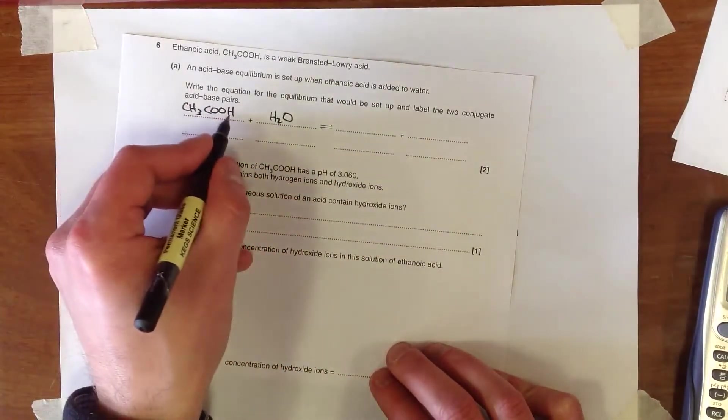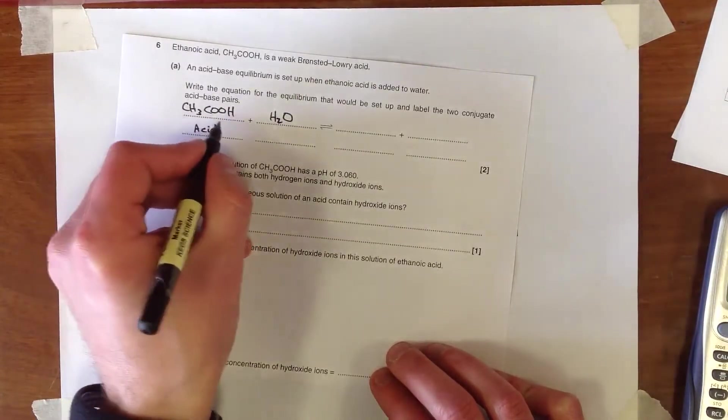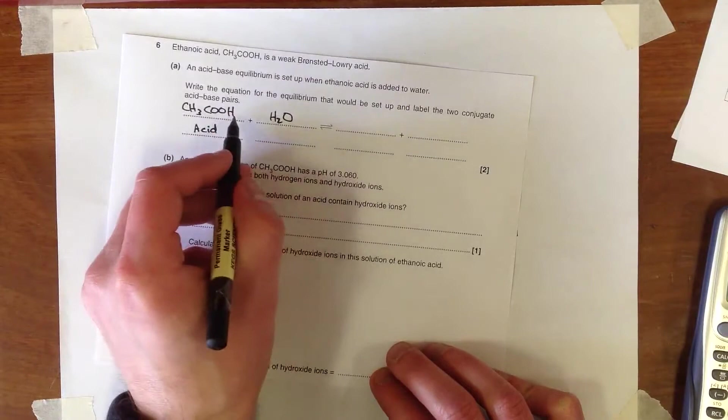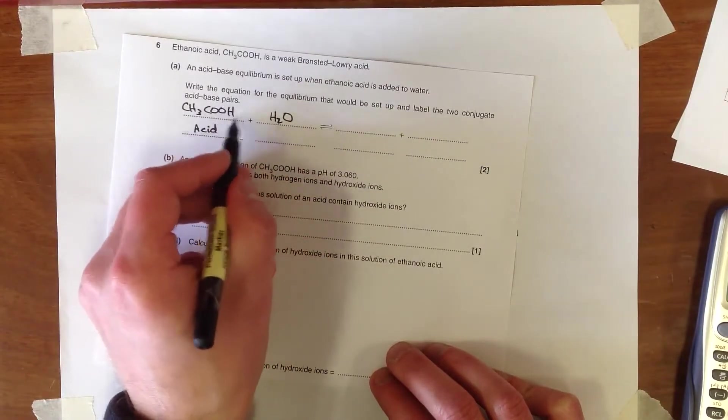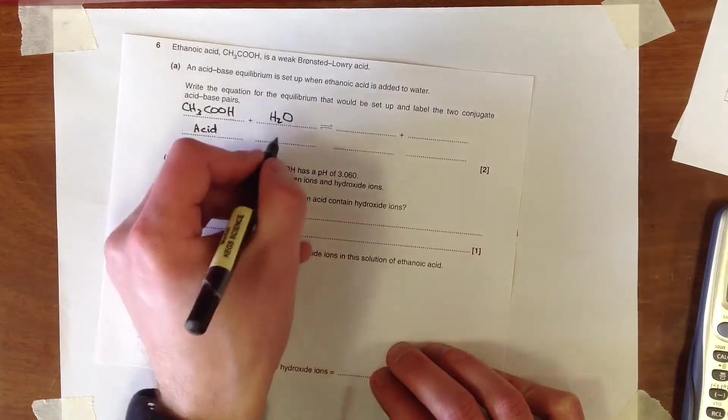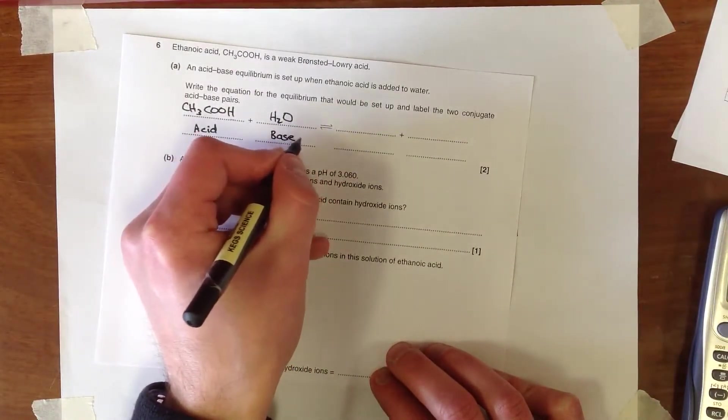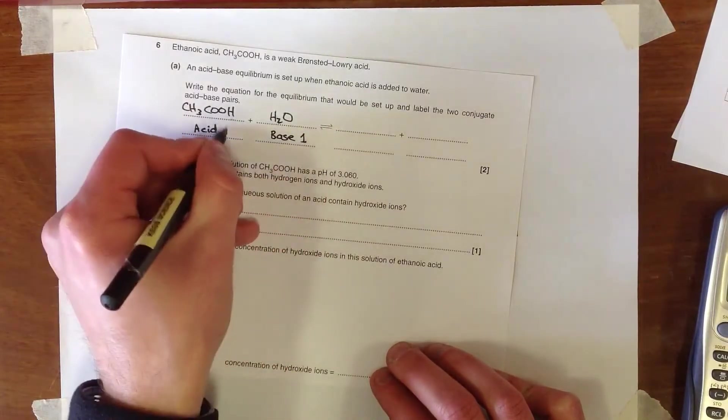So ethanoic acid is going to act as an acid. And it's going to have a proton removed from it. This proton, which is acidic, which is bonded to oxygen, is going to be removed from it by water, which is going to act as a base. So base 1 and acid 1.